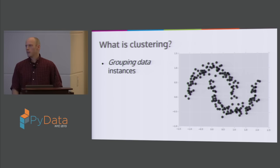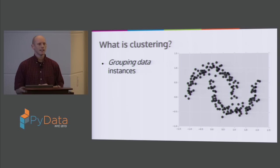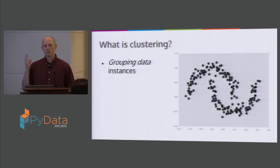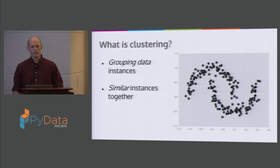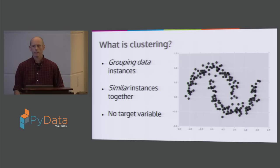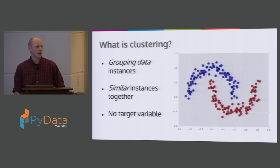The idea is that we have a bunch of data instances, data points. Here I'm using the two moons data drawn with scikit-learn, random state 19. By the end of this talk, you'll be really sick of this data set — I'm going to keep using it over and over again. The point of clustering is to group the data points so that we have similar instances in the same group and dissimilar instances in different groups. We don't have a target variable, so we need to do this without any supervision. This is what we want the answer to be — we color the points based on the true groups and assign each point to a cluster.